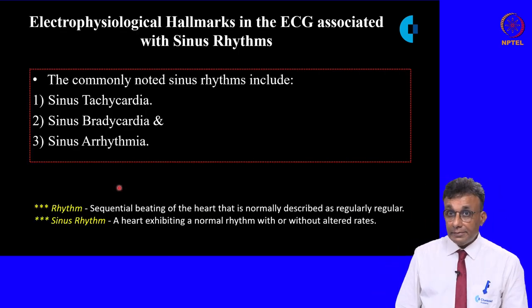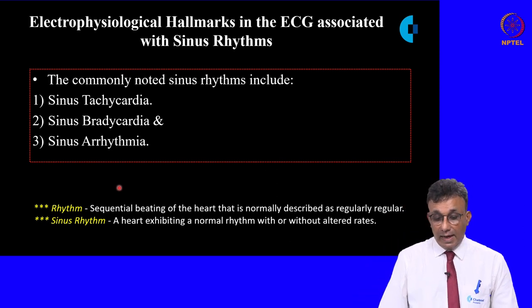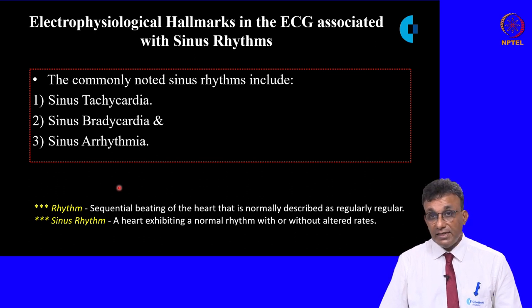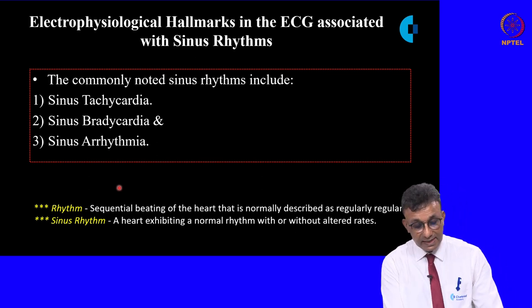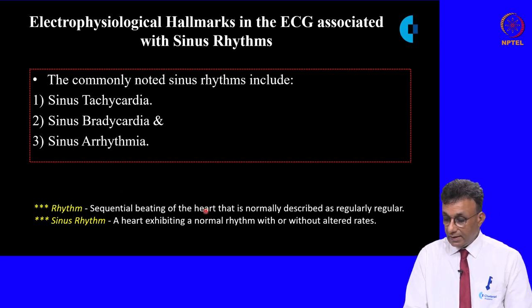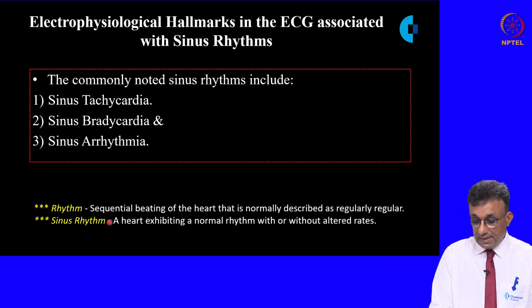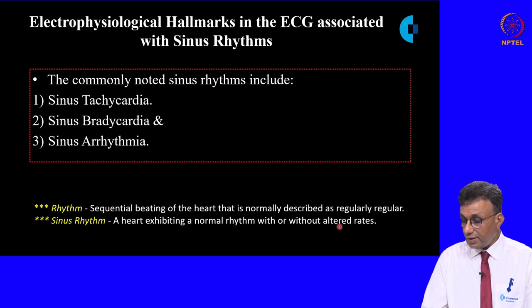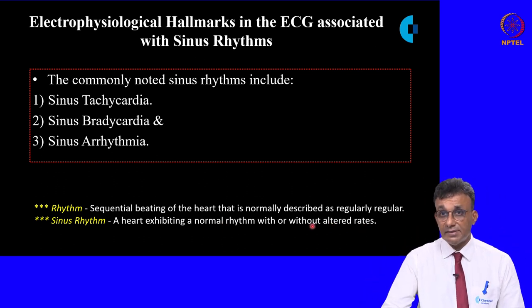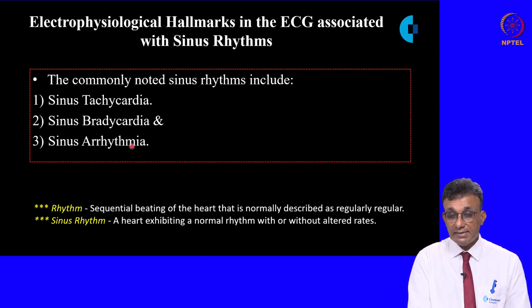Having covered the core electrophysiological properties of the heart, we now move to electrophysiological hallmarks of the ECG associated with sinus rhythms. A sinus rhythm refers to a rhythm in which the heart beats sequentially and normally, described as regularly regular. The sinus rhythm usually exhibits a normal rhythm with or without altered rates. Three important sinus rhythms are sinus tachycardia, sinus bradycardia, and sinus arrhythmia.